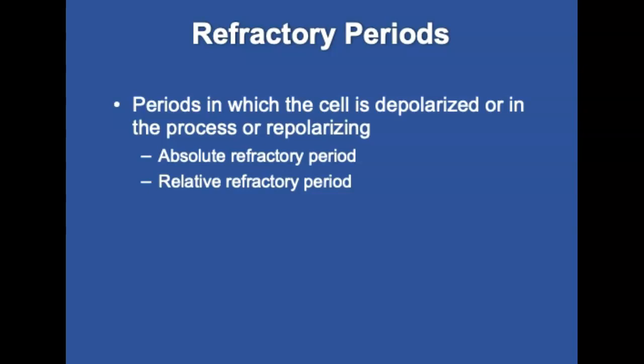Let's talk about refractory periods. This is the period during which the cell is depolarized or in the process of repolarizing. It consists of two phases. The first half represents the absolute refractory period — a period of time from Phase 0 to the middle of Phase 3 in which the ventricles have not sufficiently repolarized to enable another depolarization. The second half represents the relative refractory period, from the middle of Phase 3 to about the beginning of Phase 4, indicating that some cells have repolarized sufficiently to depolarize again.